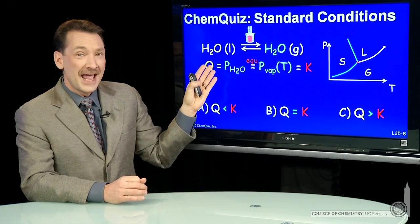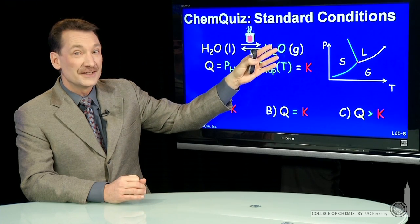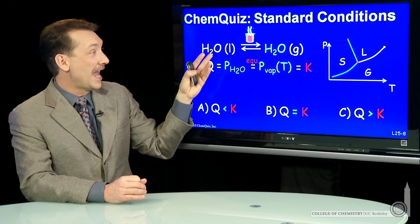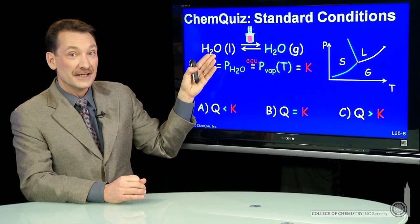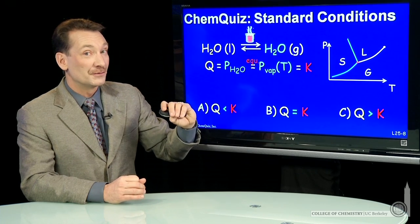Well, it's not at equilibrium because Q is going to be bigger than K. If I have 1 atmosphere of gas at 25 degrees C, that's larger than the equilibrium value at 25 degrees C.